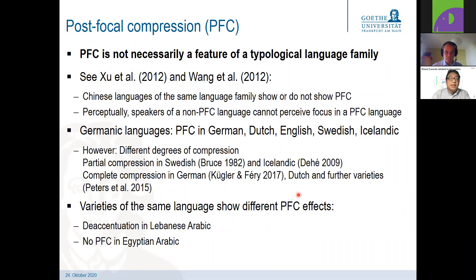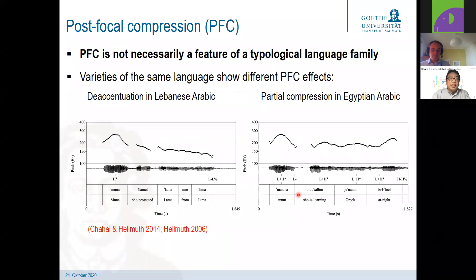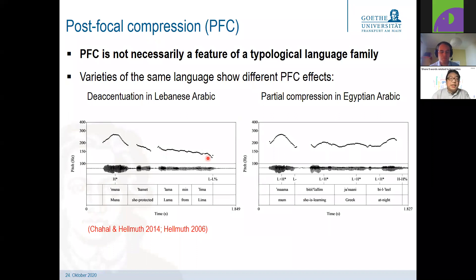Varieties of the same language also show different post-focal compression effects. An example for Arabic, taken from Kahal and Helmut, shows Lebanese Arabic mirroring German and English — after initial focus, there is almost flat F0. Whereas in Egyptian Arabic, after initial focus, there are still clearly visible F0 movements in the post-focal domain, though in a compressed pitch register.